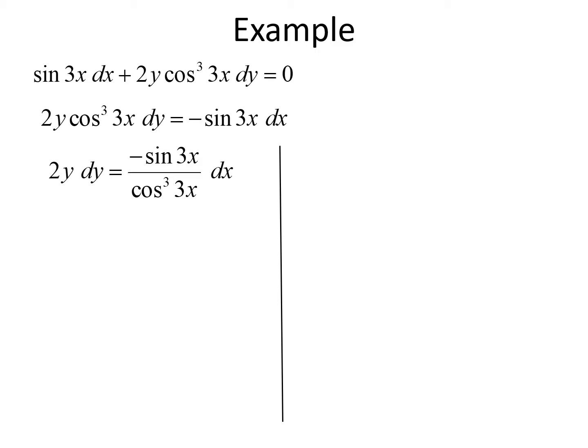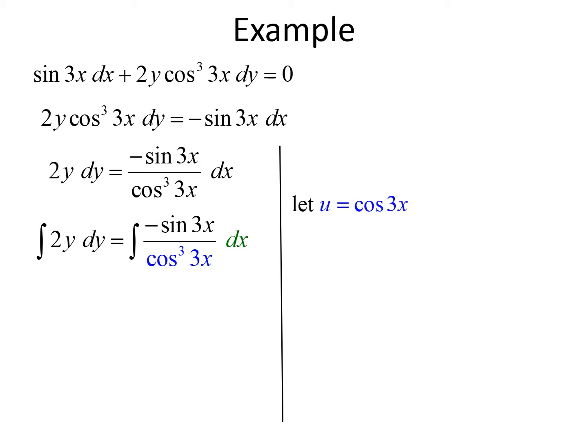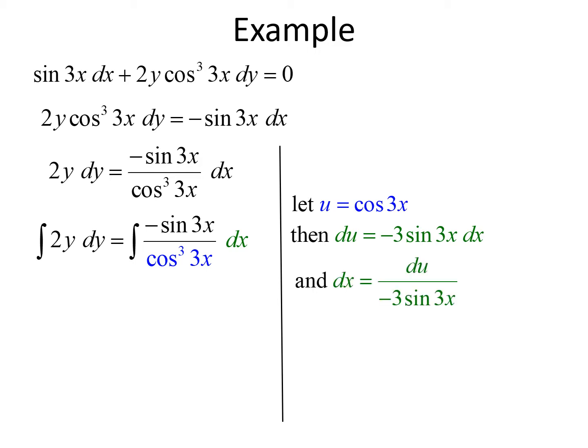Now that our variables are separated, we integrate both sides: the integral of 2y dy equals the integral of negative sine 3x over cosine cubed 3x dx. To integrate the right hand side, we use u substitution. Let u equal cosine of 3x, so du equals negative 3 sine of 3x dx, which means dx equals du divided by negative 3 sine of 3x. Substituting in, the sine of 3x terms cancel out, leaving everything in terms of u.